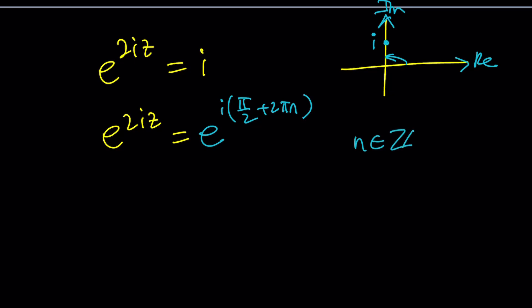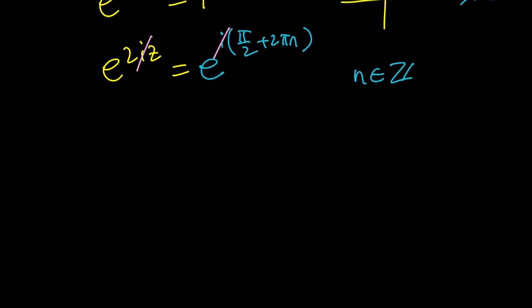Now, we can go ahead and get rid of the i. And of course, the bases are not going to matter anymore. And now we can write it as 2z equals pi over 2 plus 2 pi n. And then z equals pi over 4 plus pi n. Awesome.